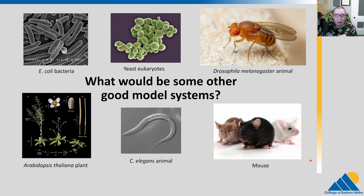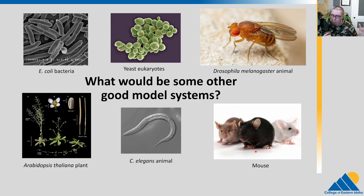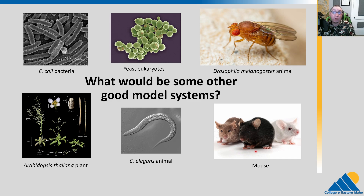If we want something closer — a mammal — to humans, we often use mice. There are many aspects of mice development, growth, and biochemical processes that are very similar to us. But there are also some that are different. If you want to study the flu, mice don't get the flu the same way we do, so a lot of flu researchers use ferrets because their immune system functions very similar to ours. It depends on the question you're asking, but there's generally a model system out there to study it.